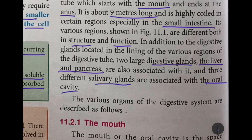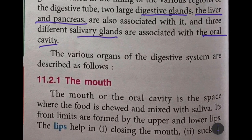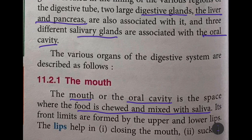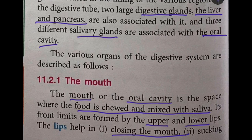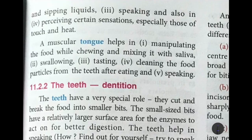First we come to the mouth. The mouth, also known as the oral cavity, is the space where food is chewed and mixed with saliva. You put in the food, chew it, and while chewing you mix it with saliva. The lips — you have the upper and lower lips — help in the closing of the mouth, and they also help in sucking through a straw as well as sipping liquids from a glass or mug.